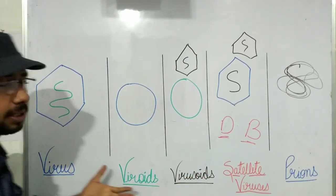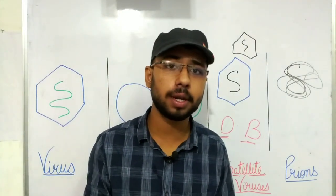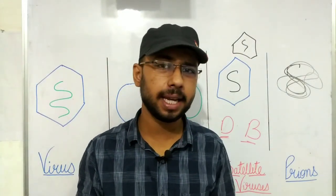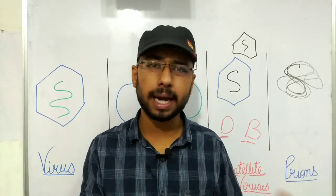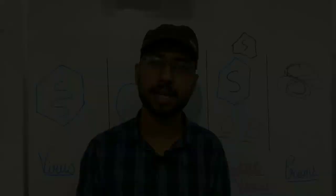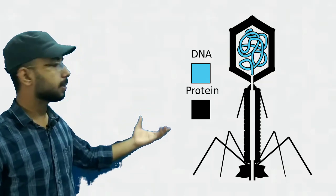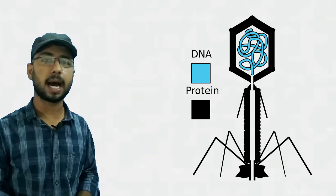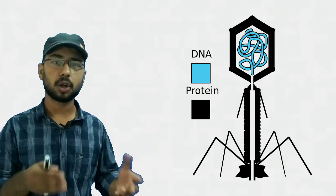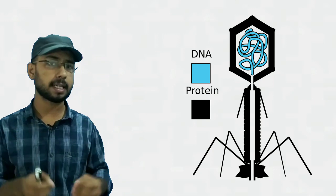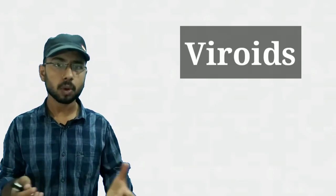Now we are going to learn all of these terms easily so we can remember them for a long time. Let's go to the screen and make all these terms clear in your mind. Starting with point number one — Virus. Virus is a general term that everyone knows: it contains a protein coat and a genetic material, which may be RNA or DNA. That is not a forgettable point.